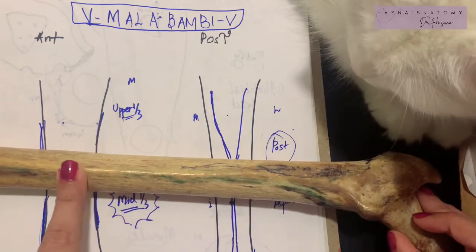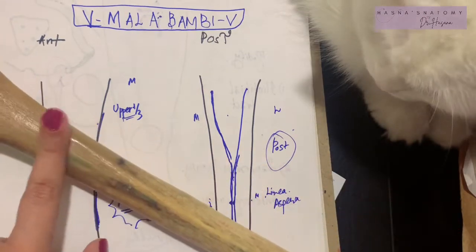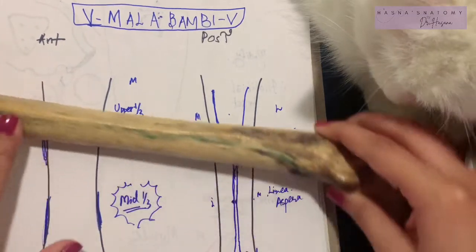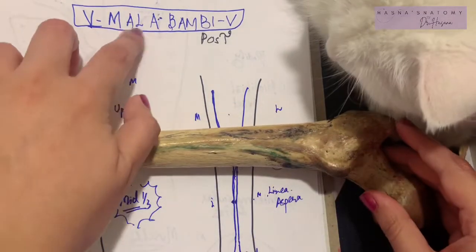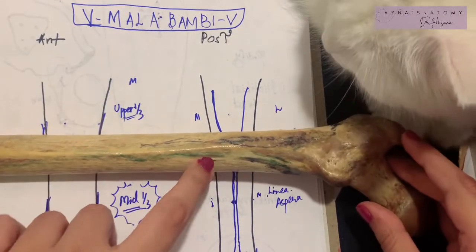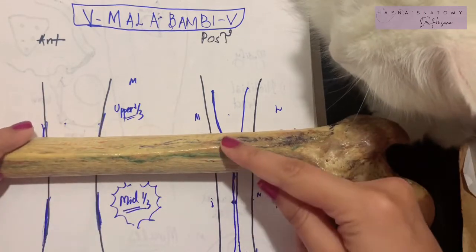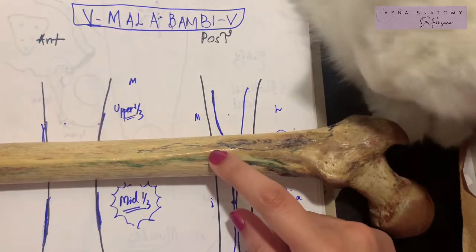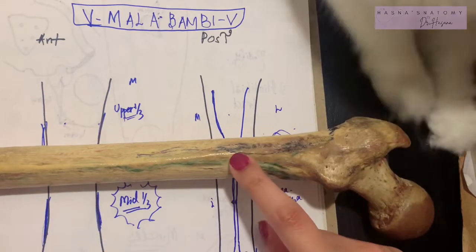Then we have AL, the adductor longus, going more laterally. This is also attached to the medial lip of the linea aspera. Going more laterally is the adductor brevis.